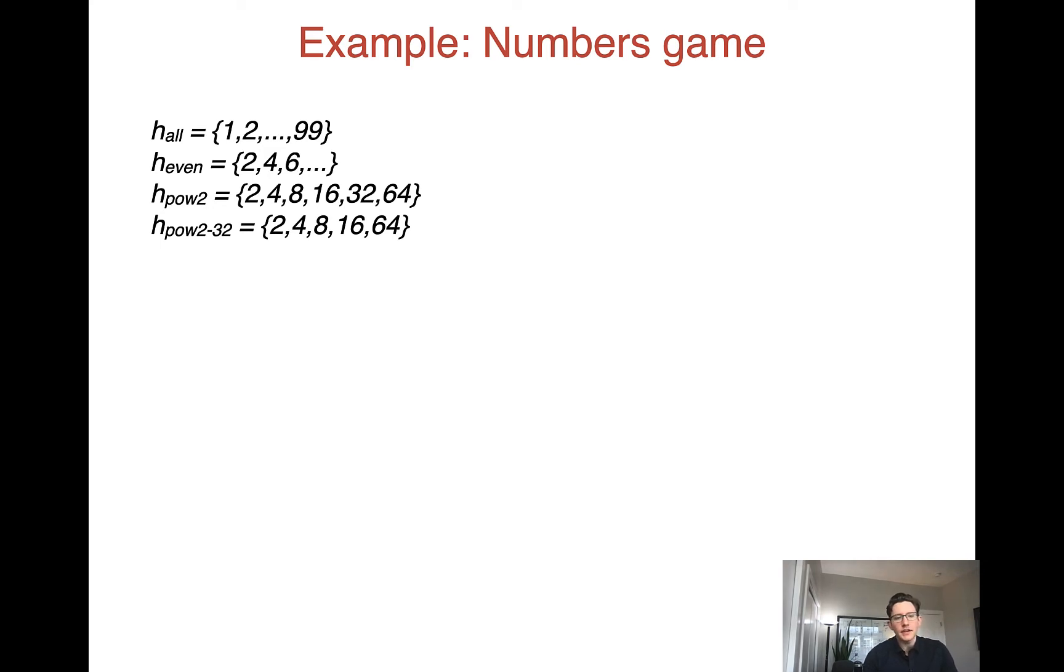we're imagining that there's some set of numbers that we don't know, and we get to see a subset of those numbers. We imagine that basically each observation is drawn uniformly from that set, and we're hypothesizing about what those numbers are. That is, what is the set of numbers that we don't know.